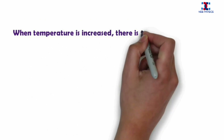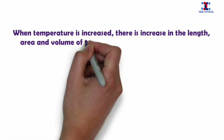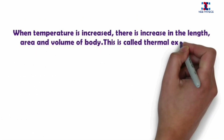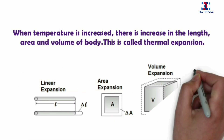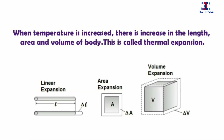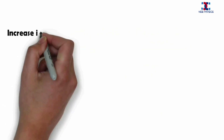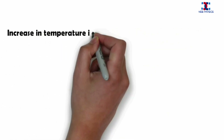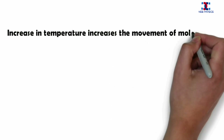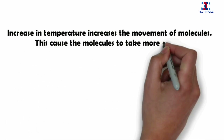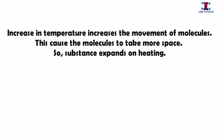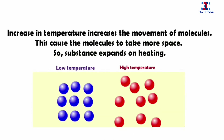When temperature is increased, there is an increase in length, area, and volume of the body. This is called thermal expansion. Increase in temperature increases the movement of molecules, which causes the molecules to take more space, resulting in expansion upon heating.